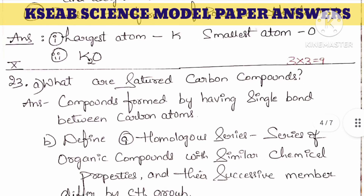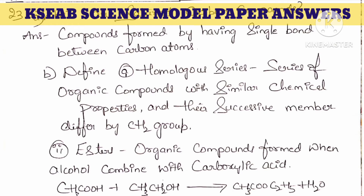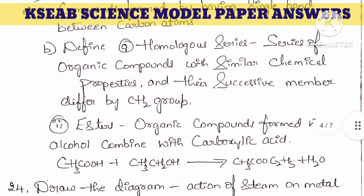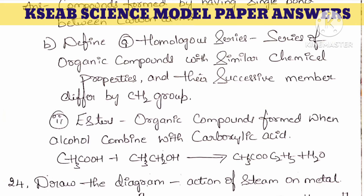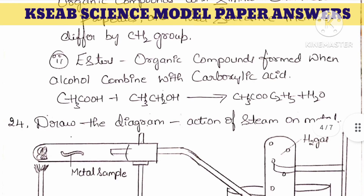What are saturated carbon compounds? Answer: compounds formed by having single bonds between carbon atoms. Define homologous series: a series of organic compounds with similar chemical properties whose successive members differ by a CH2 group. Define esters: organic compounds formed when alcohol combines with carboxylic acid in the presence of concentrated sulfuric acid.